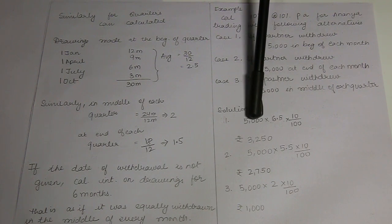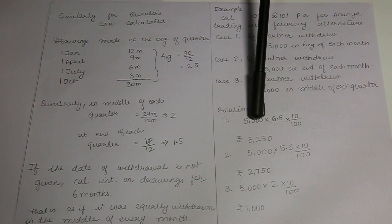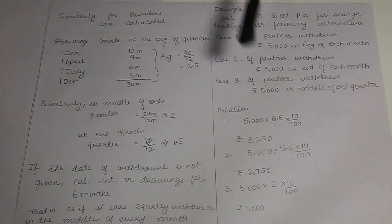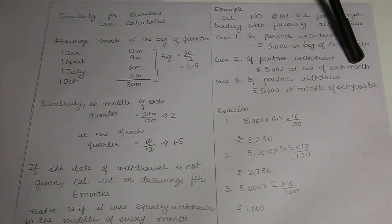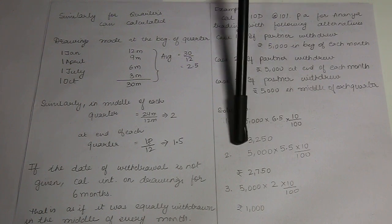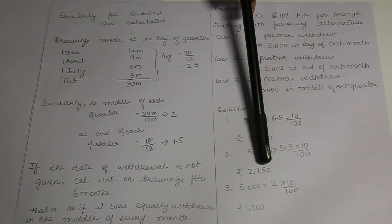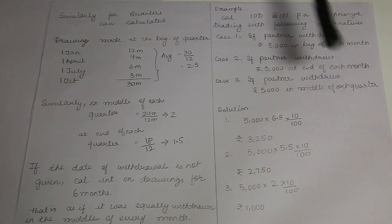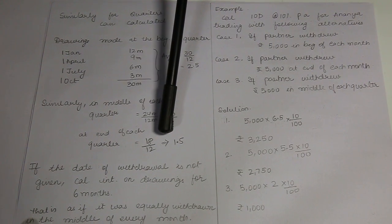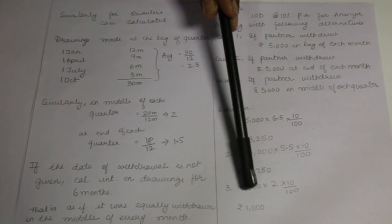Both methods give the same answer as the 12s cancel. Case 3: if a partner withdraws Rs. 5,000 in the middle of each quarter, the factor is 2 months. So interest = 5,000 × 2 × 10/100 = Rs. 1,000.